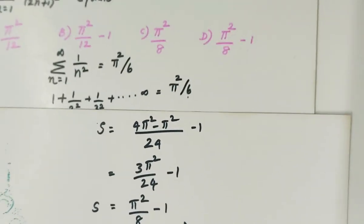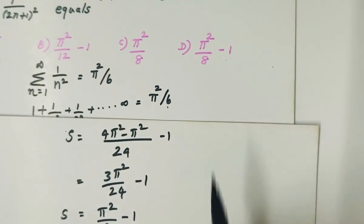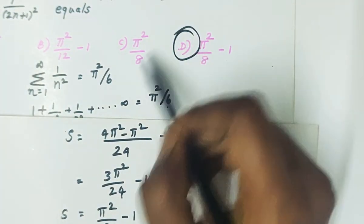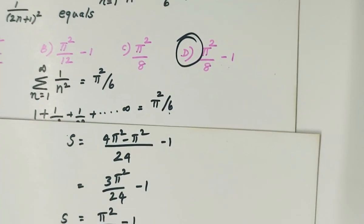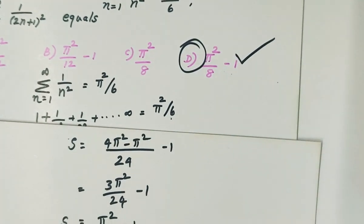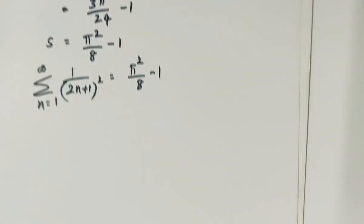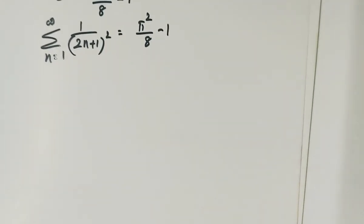So the answer is pi square by 8 minus 1, which corresponds to option D. Pi square by 8 minus 1 is the right answer. Thanks for watching.